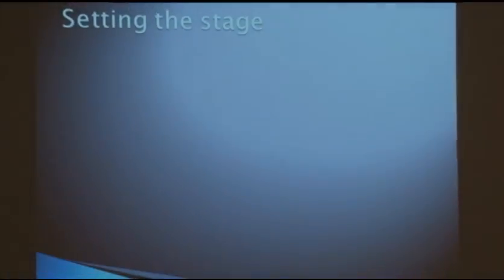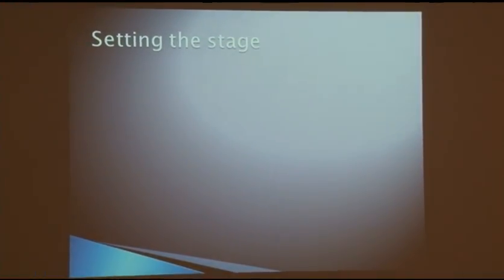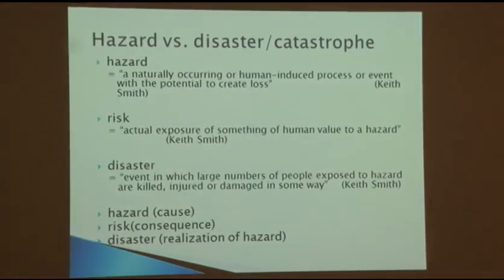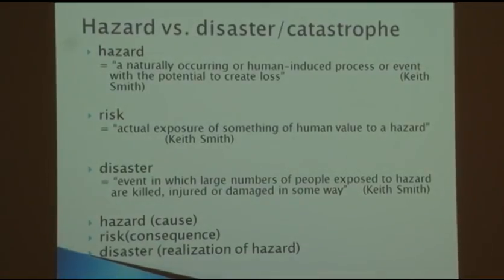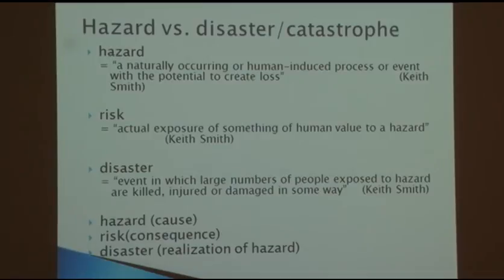Let's spend a couple of minutes doing a Hurricanes 101 to set the stage. When we talk about hazards, we're looking at different types of systems that occur naturally in the climate system that affect us day to day — snowstorms, hurricanes, ice storms, and so on. It's our exposure to those hazards that sets up the possibility for a disaster to occur. When there's significant loss of life or limb, we go from a regular nuisance hazard like a snowstorm to something that causes unfortunate loss of life — that's when it becomes a disaster.